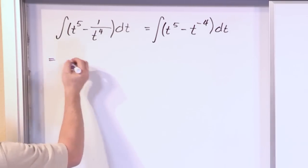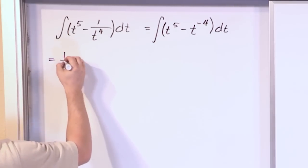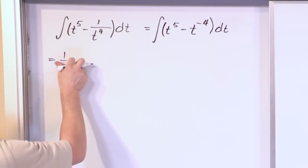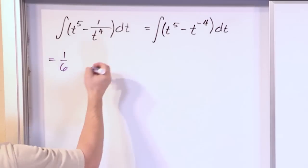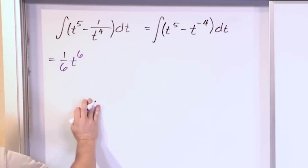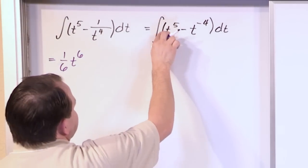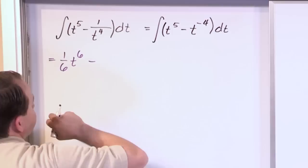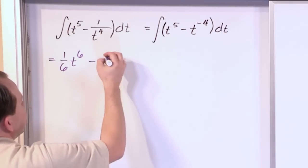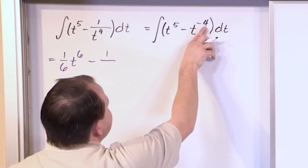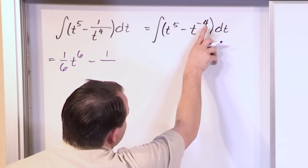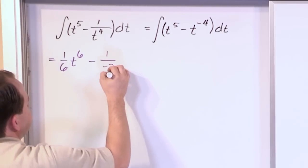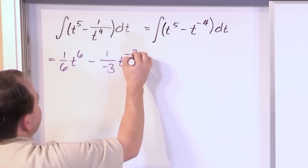Because when I do the integration, the first term is 1 sixth, get rid of this here, 1 sixth, because 5 plus 1, t to the 6th power, right? That's taking the rule that we've learned before. The minus stays along for the ride. How would we integrate this one? Well, it looks different, but it's the same thing. 1 over, what is this exponent plus 1? Negative 4 plus 1 gives you negative 3, t to the negative 3 power.